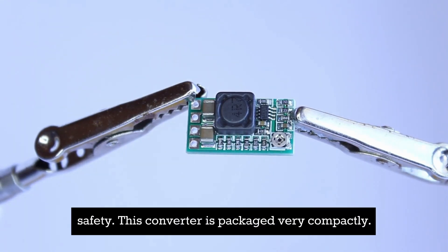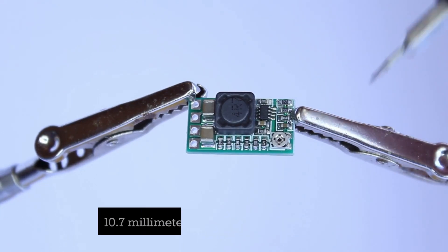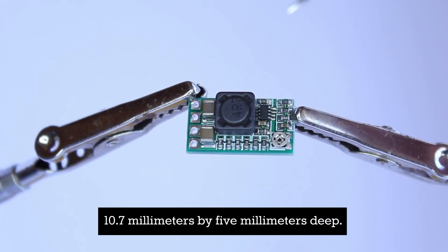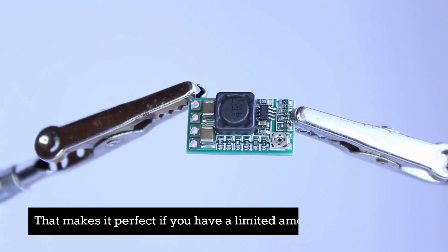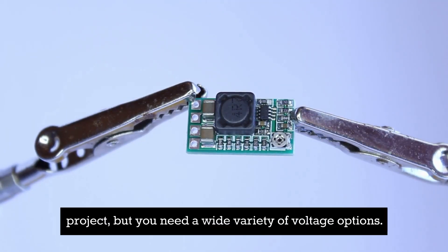This converter is packaged very compactly. It's just 20.3 millimeters by 10.7 millimeters by 5 millimeters deep. That makes it perfect if you have a limited amount of space in your project, but you need a wide variety of voltage options.